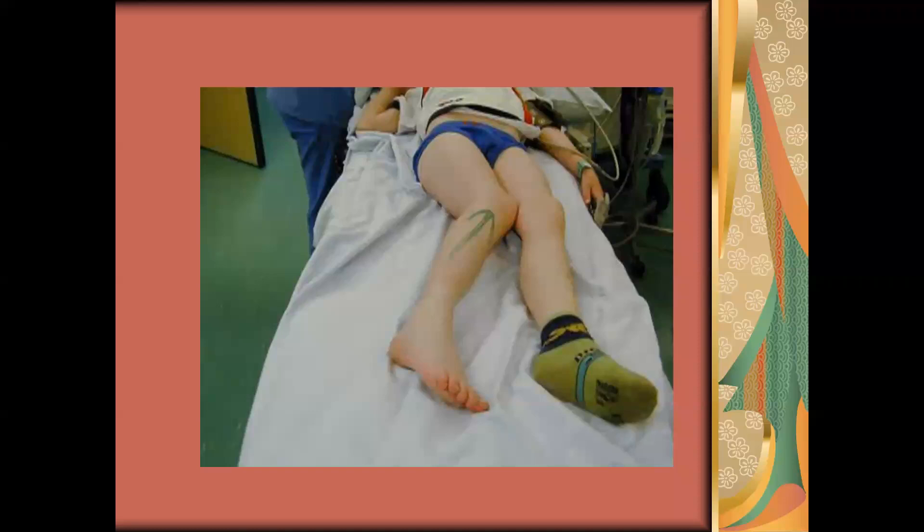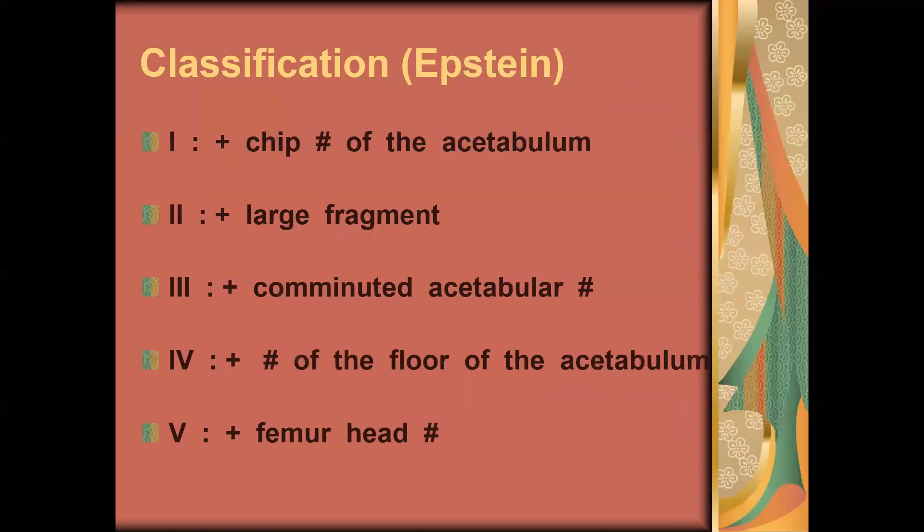The classification is called Epstein and divides dislocation of the hip into five types. Type one is dislocation with chip fracture of the acetabulum. Type two is large fragment from the acetabulum. Type three is comminuted acetabular fracture. Type four is fracture not in the posterior wall but in the floor. Type five is the severest, when there is fracture in the femur head.